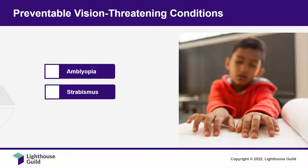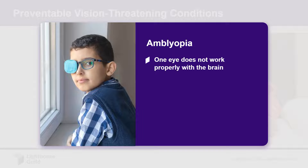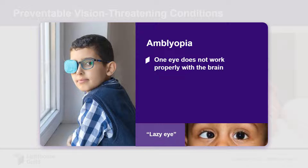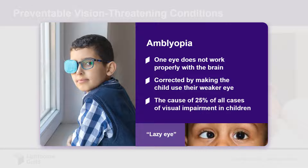Two common vision-threatening conditions exist in which vision loss in children can be avoided. Amblyopia is when one eye does not work properly with the brain, and the vision in that eye is reduced. It is sometimes called lazy eye. As the child increasingly relies on the vision in the stronger eye, the vision in the weaker eye gets worse. Amblyopia can be corrected by making the child use the weaker eye to strengthen it, done by patching the stronger eye or blurring the eyeglass lens in front of it. Because of undetected and untreated cases, amblyopia is estimated to be the cause of 25% of all cases of visual impairment in children.